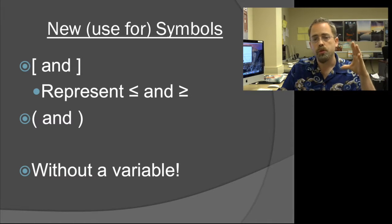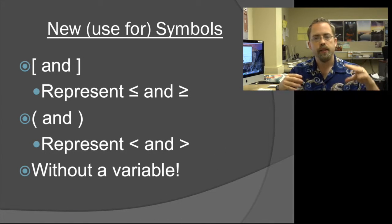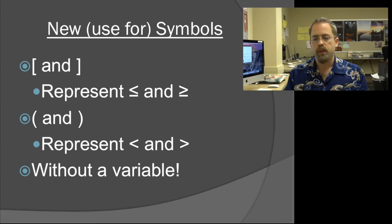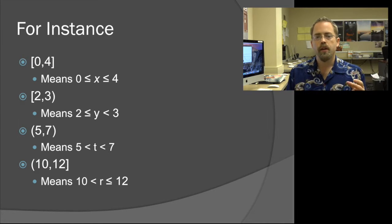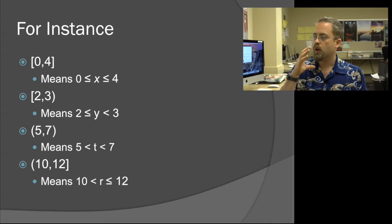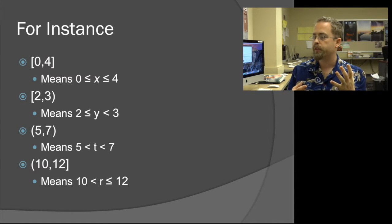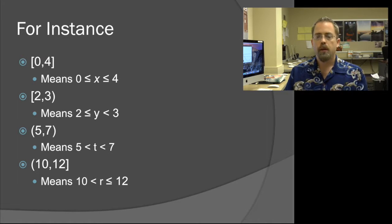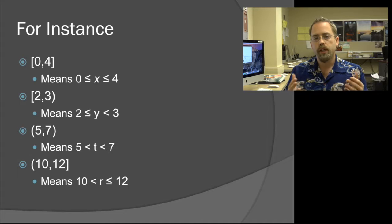Then we need other symbols - the usual parentheses, the curvy parts. And this is all done without a variable. We're just going to say the range from here to there. For example, [0,4] means from zero to four inclusive. The square sign at zero means we're allowed to be zero, and at four means we're allowed to be four. In the past you would have written this as 0 ≤ x ≤ 4. But we don't have an x - we're just talking about the range of numbers from zero to four including zero and four.